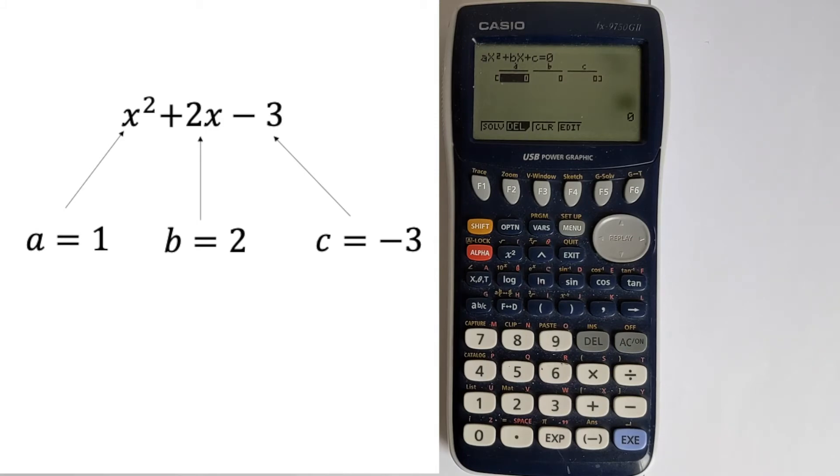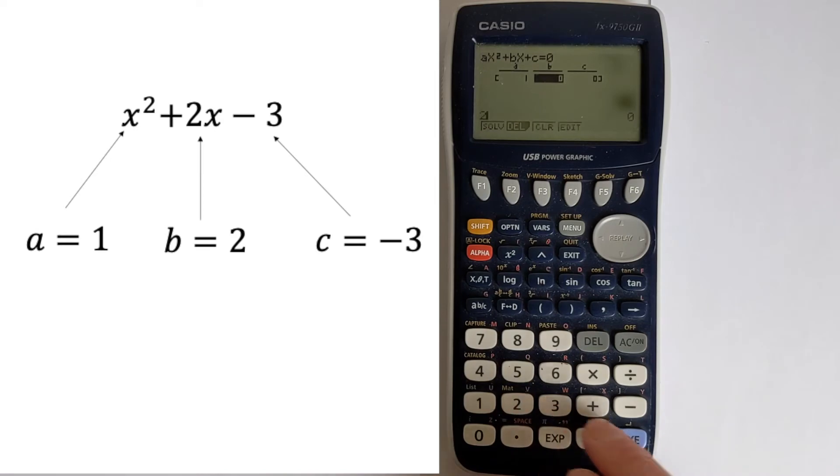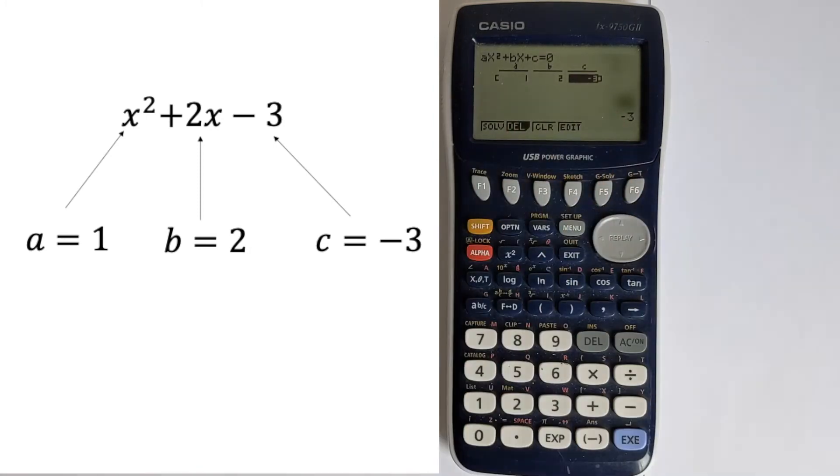the number in front of x being B, and then C is going to be whatever comes at the end. So we've got A = 1, because we've only got 1x². Then we've got B = 2, and then C is going to be -3. You must, of course, make sure your equation equals 0, otherwise these numbers will be wrong.